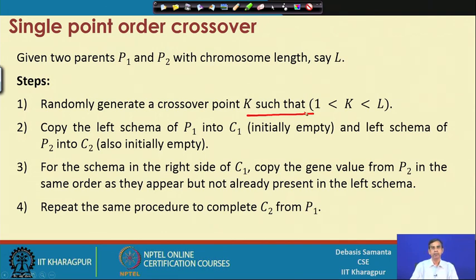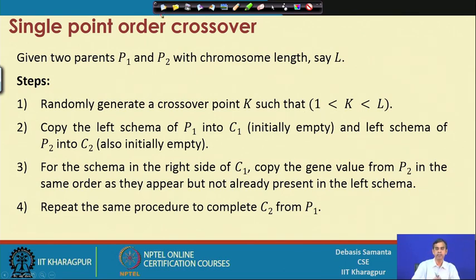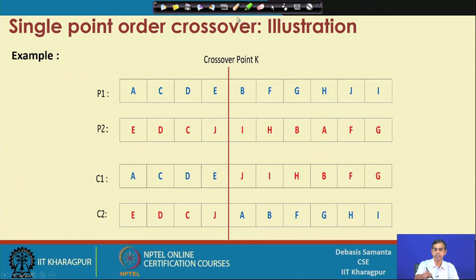The second step is to copy the left schema of P1 into child C1 (initially empty) and the left schema of P2 into C2. For the right side of C1, copy gene values from P2 in the same order as they appear, but only if they are not already present in the left schema. Repeat the same procedure to compute C2 from P1.